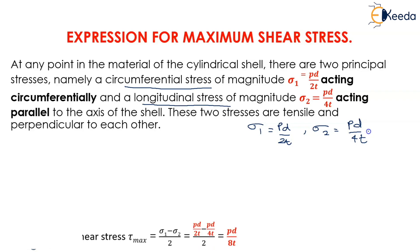So now the maximum shear stress, that is tau max, becomes sigma1 minus sigma2 divided by 2. So this becomes Pd by 2t minus Pd by 4t divided by 2.